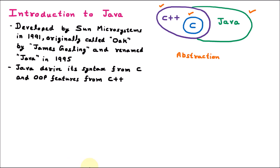Let us suppose we have a car. When we purchase the car, we are only aware about the steering wheel and how the brake works, how the controls work. We are not aware about how the wires are going in the engine or how the brakes are applied. So that data is hidden from the user. Abstraction means hiding the unnecessary data and showing the necessary data to the user.